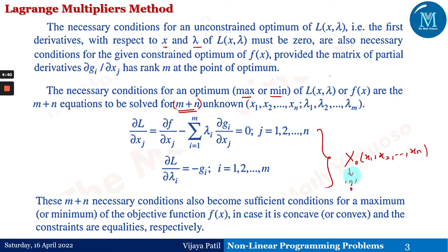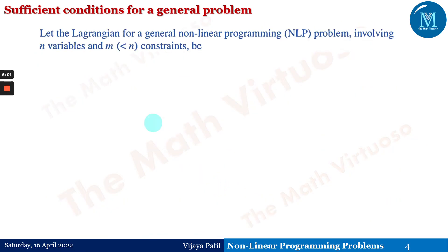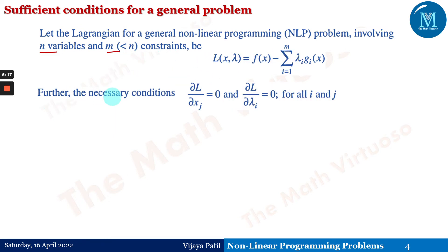These m + n necessary conditions also become sufficient conditions for a maximum or minimum of the objective function. Solving these equations leads us to the point (x1, x2, ..., xn) where the maxima or minima exist. Whether that point is a maximum or minimum may not be known in advance — we have to make that determination. The sufficient condition for a general nonlinear programming (NLP) problem involves n variables and m constraints, with m less than n.